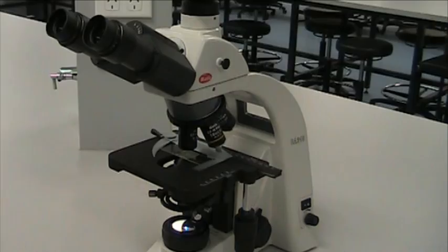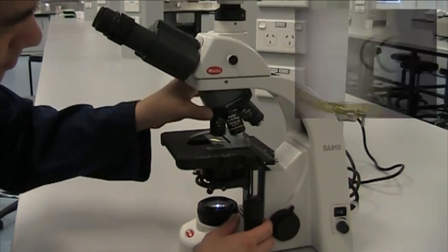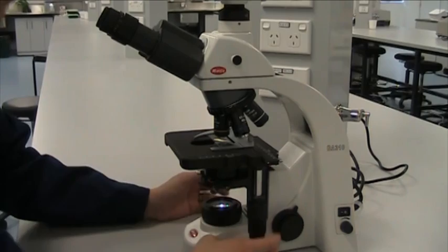The microscope is now set up for Köhler illumination. If you want to use a higher power objective, rotate the nose piece. The condenser diaphragm needs to be set as you move between each objective.